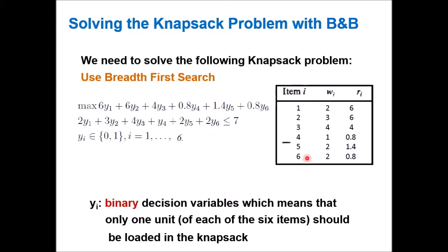For these six items, the values r_i are the coefficients in the objective function: 6y1, 6y2, 4y3, and so on. Subject to a single capacity constraint — for example, 2·y1 + 3·y2, where these are the weights — multiplied by the binary decision variable y_i, which indicates whether we select item i or not. Since y is binary, you can select each item at most once; you cannot take two or three of the same item.